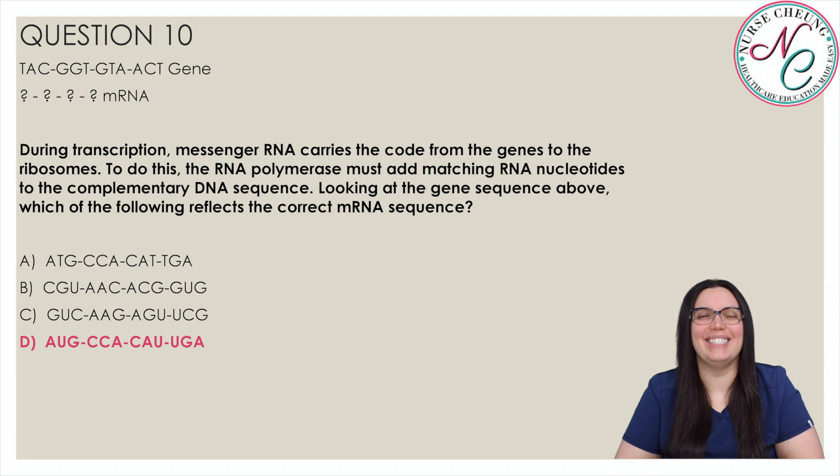And the correct answer is D: AUG-CCA-CAU-UGA. The discovery of base pairs by Watson and Crick proved that there were only certain combinations of nitrogenous bases possible. This is the meaning of the term complementary in the question. So for example, guanine always bonds with cytosine. The three possible bonds are G to C, A to T, and A to U.